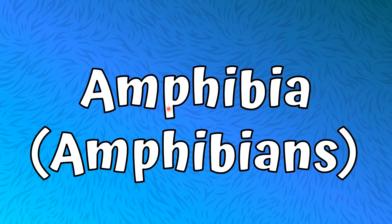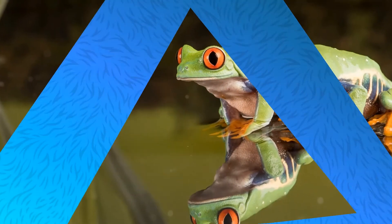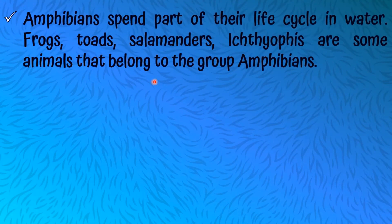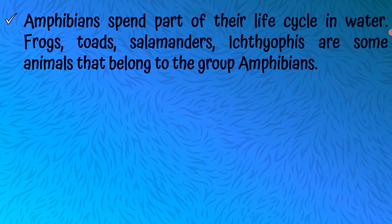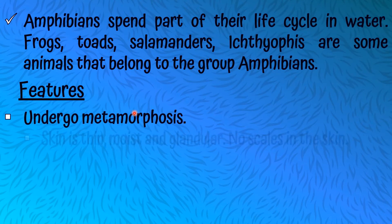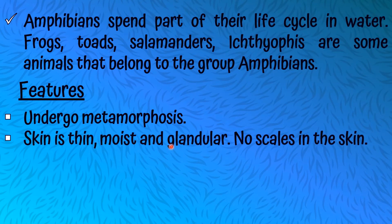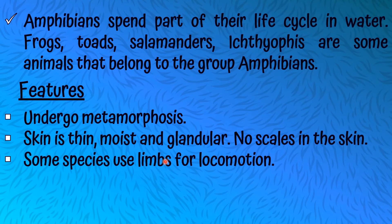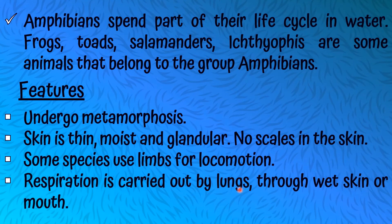Let's talk about our second group of vertebrates: Amphibia, or Amphibians. Amphibians spend part of their life cycle in water. Frogs, toads, and salamanders are some animals that belong to the group Amphibians. Features of Amphibians: they undergo metamorphosis. The skin is thin, moist, and glandular with no scales. Some species use limbs for locomotion. Respiration is carried out by lungs, through wet skin, or through the mouth — there are three respiratory organs.